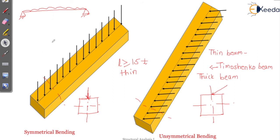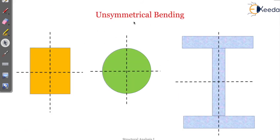For a beam as a one-dimensional structural member, the length is very high compared to the lateral dimension. As we progress with the chapter, we will use some sign conventions. Unsymmetrical bending can occur even for symmetrical cross sections — when the load line is inclined, even though the section is symmetrical, that inclination can be the reason for unsymmetrical bending.